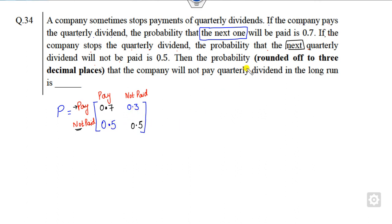Now what is your target? So your target is to find, what is your required probability? The probability that company will not pay in the long run. So what is the meaning of the long run? Steady state probability.